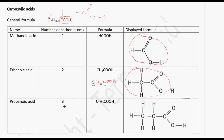The next member of the group is propanoic acid, which has three carbon atoms. Therefore N is 2, so it will be C2H5COOH — since 2×2+1 equals 5. And the displayed formula for propanoic acid is this.